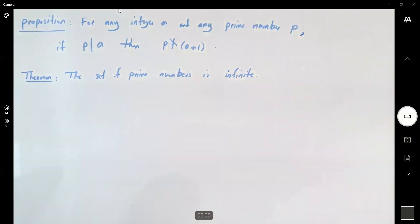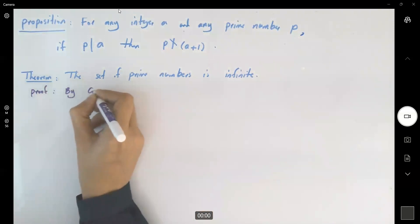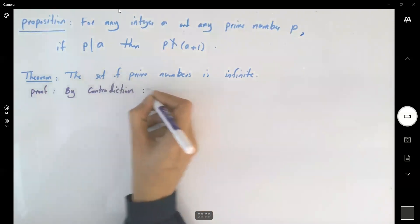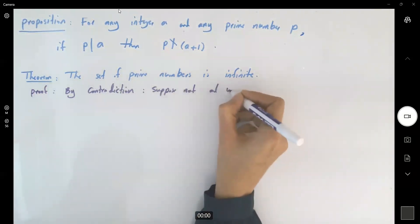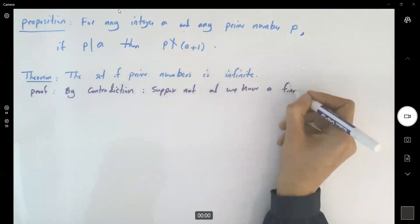So suppose not. Suppose it's not infinite. Suppose you have finite numbers of prime numbers. Proof by contradiction. Suppose not and we have finite numbers of primes.